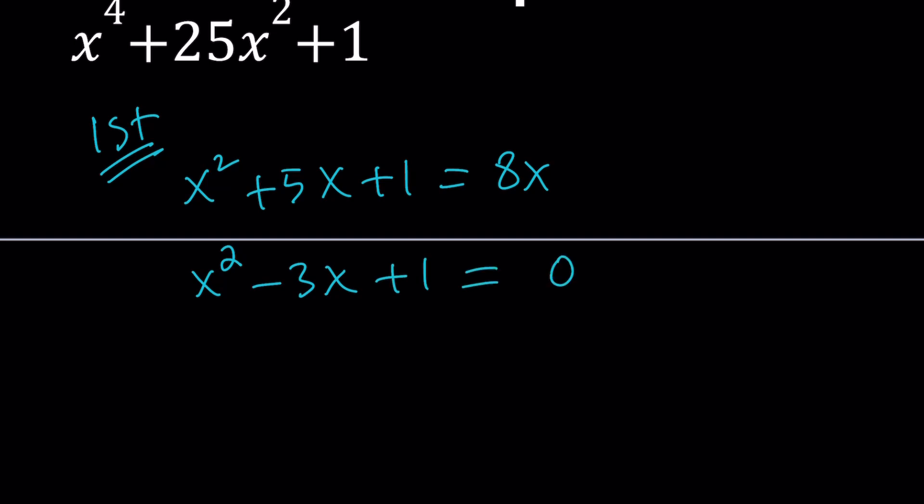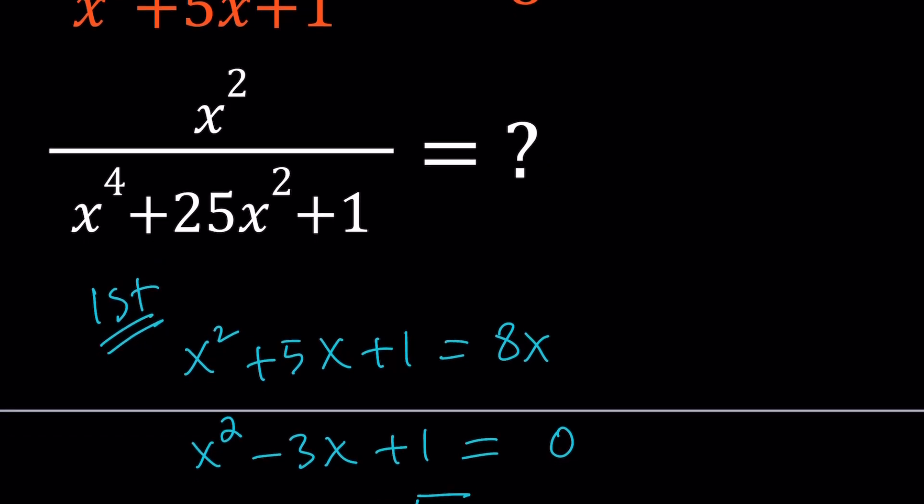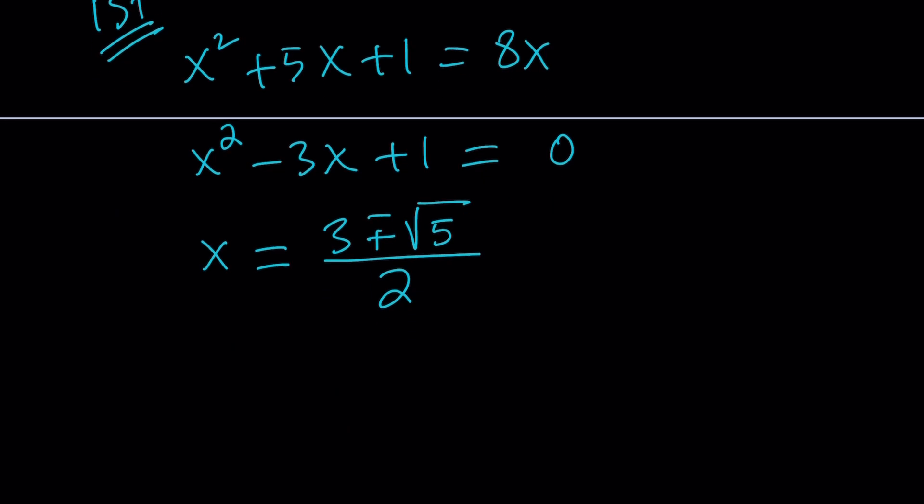You should be familiar with this equation. I think it came up in a recent video. If you solve it using quadratic formula, you're going to get negative b plus minus the square root of b squared minus 4ac, which is 5, 9 minus 4, divided by 2. So there are two x values for which this is going to work, but they should give us the same answer because we have a fixed expression. Let's go ahead and use the one with the plus sign, so 3 plus root 5 divided by 2.